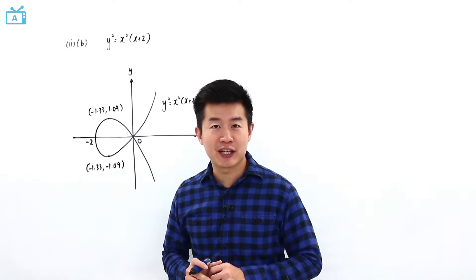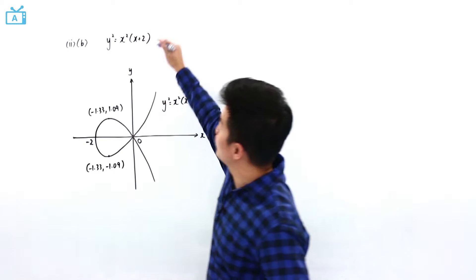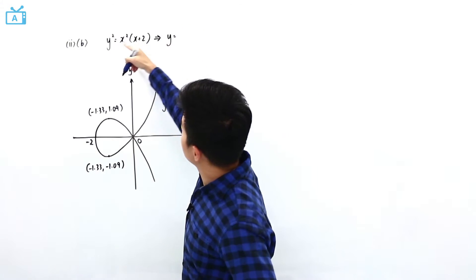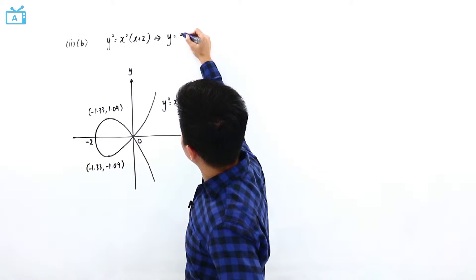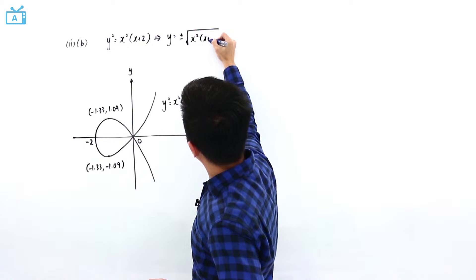Because of the limitation of our graphing calculator, we will not be able to plot this directly. So in order for us to continue and use our graphing calculator, we need to square root both sides, which means that on the right-hand side, it is going to be plus or minus square root of x squared, x plus 2.